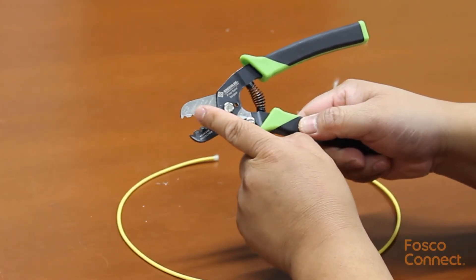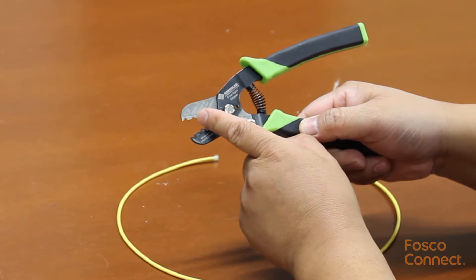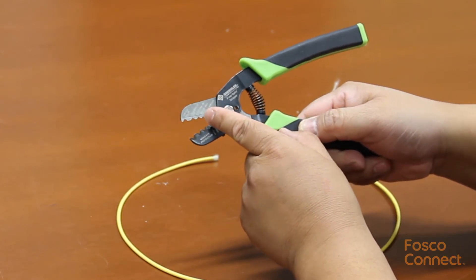The first notch says 2.8 to 3mm outer jacket. The second notch says 2 to 3mm loose tube.